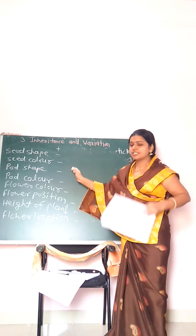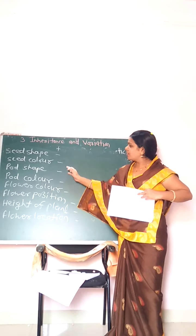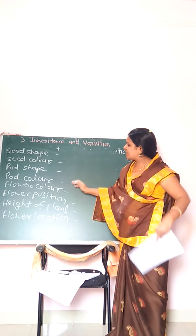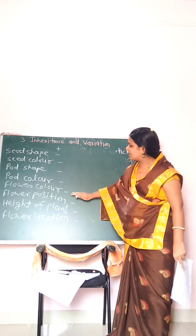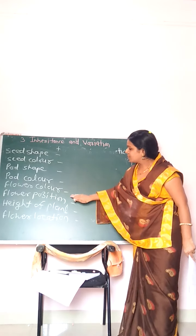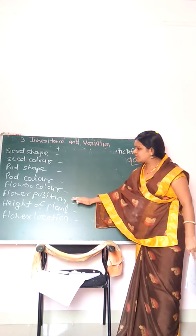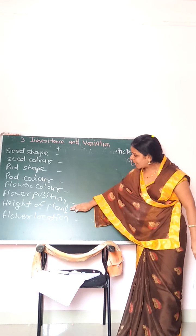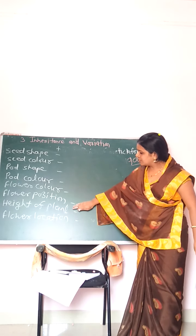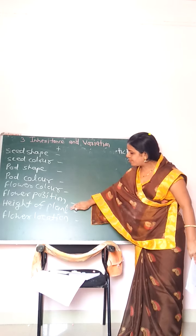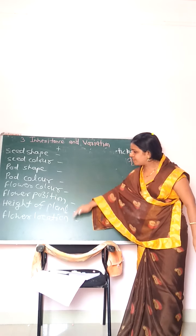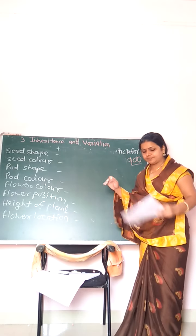The seven traits are: seed shape, seed color, pod shape, pod color, flower color, flower position, and height of plant — along with flower location.